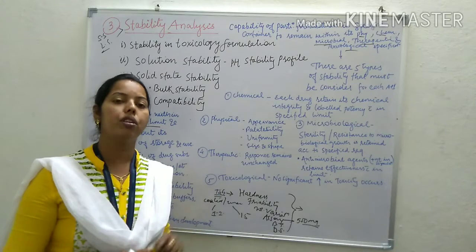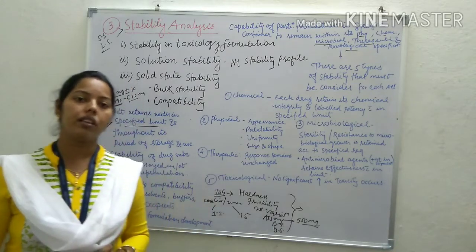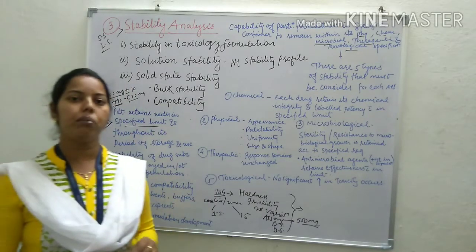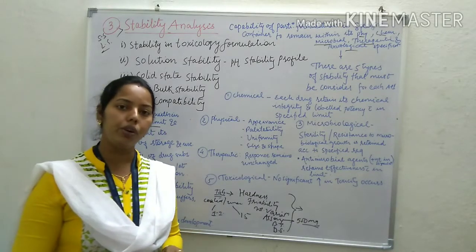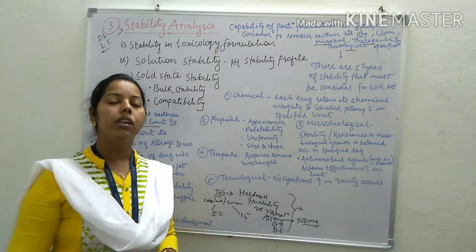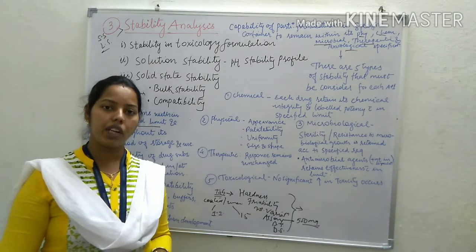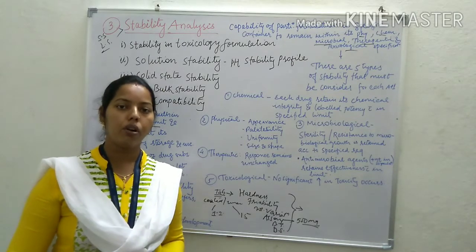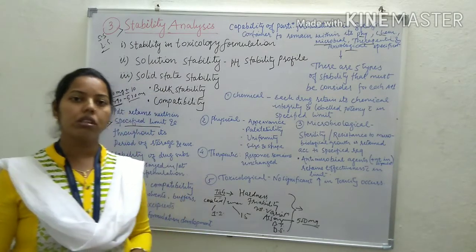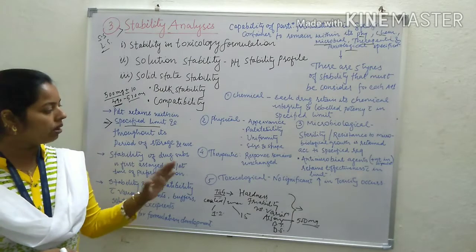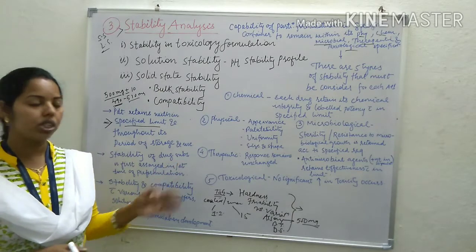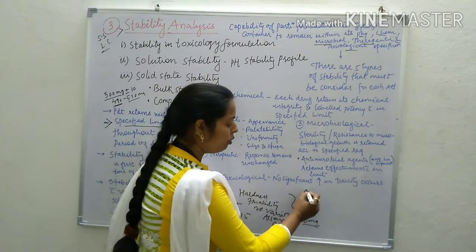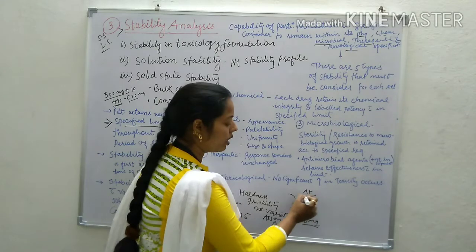For example, if a syrup or any dosage form has a shelf life of one year or two years, it means the results obtained at the time of manufacturing for the evaluation parameters should remain the same for up to two or three years. That would be its shelf life.